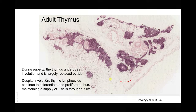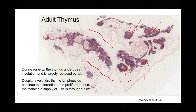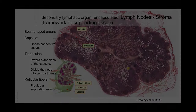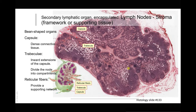During puberty, the thymus undergoes involution and is largely replaced by fatty tissue. However, there is still evidence of thymic tissue in the adult thymus, and it remains functional even in adult life.